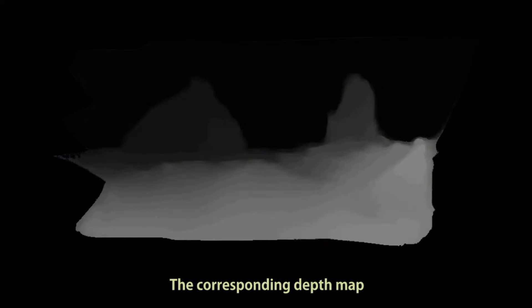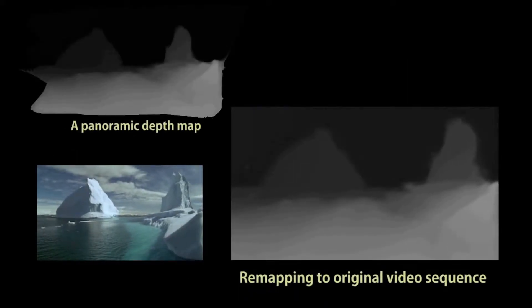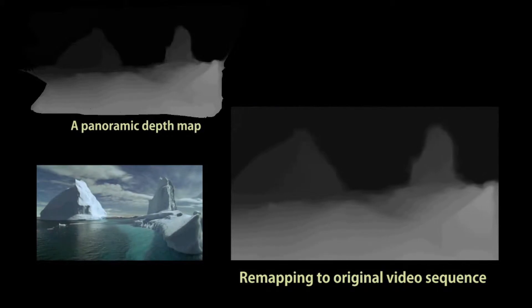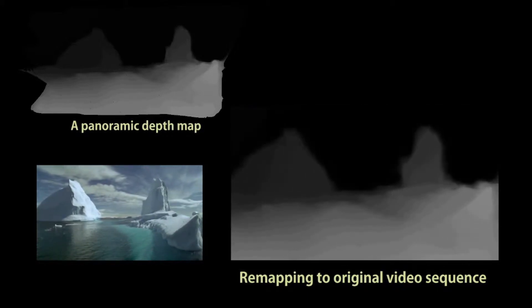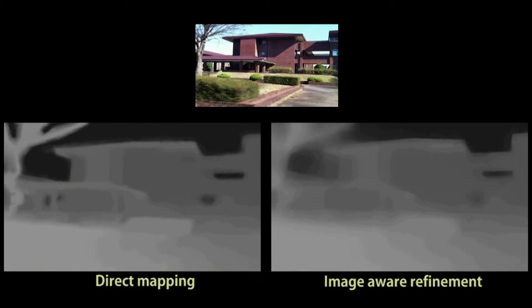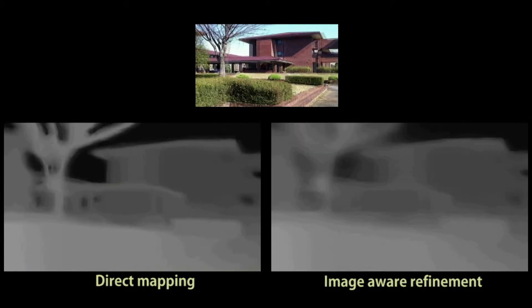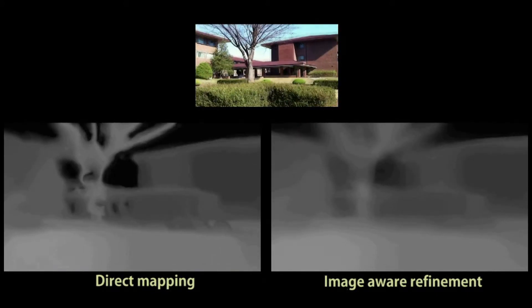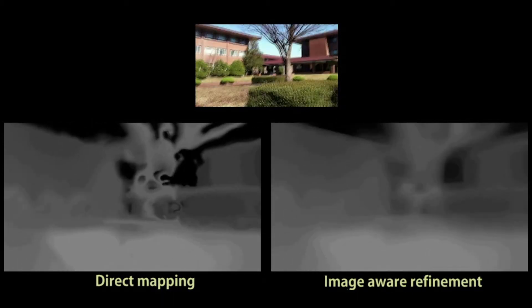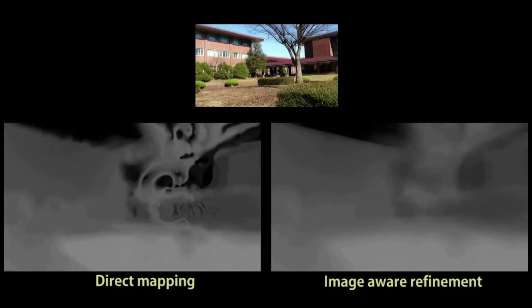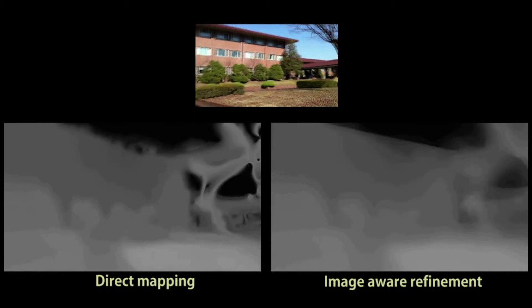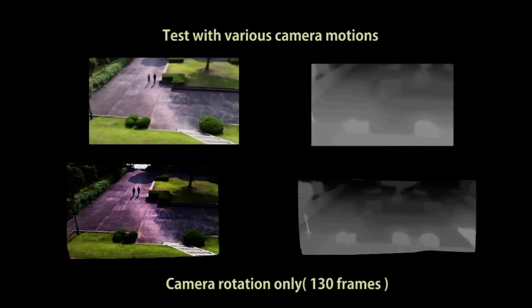This depth map is then remapped to the original sequence and used as the initial guess for each individual depth map in the sequence. The remapped depth map may contain some artifacts, especially in the areas around edges. The image-aware refinement sharpens the blurry edges using the color difference between the building and the sky.